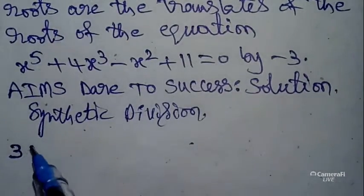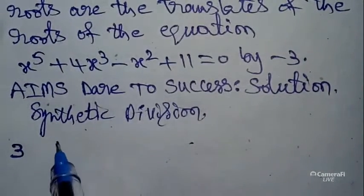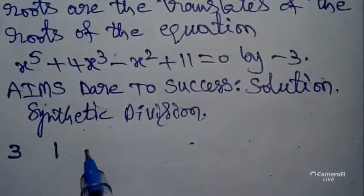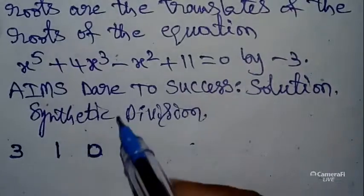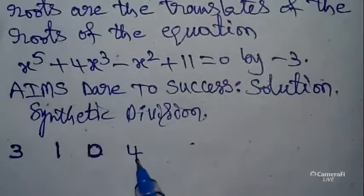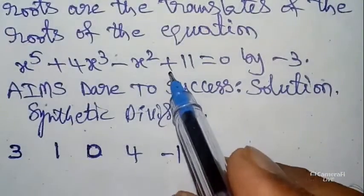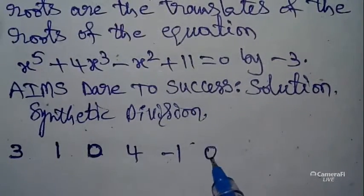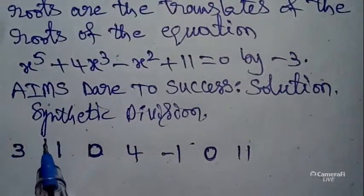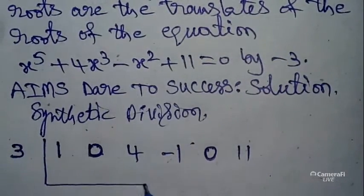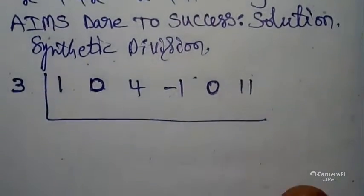The coefficient of x⁵ is 1. There is no x⁴ term, so that coefficient is 0. The coefficient of x³ is 4. The coefficient of x² is -1. There is no x term, so write 0. The constant value is 11. You can take a box like this.